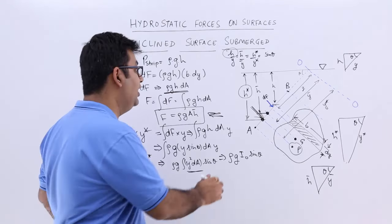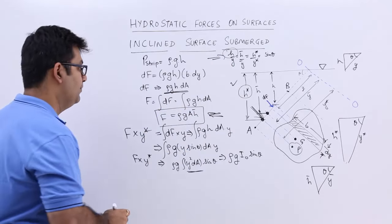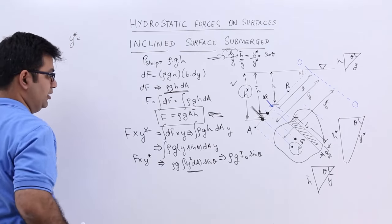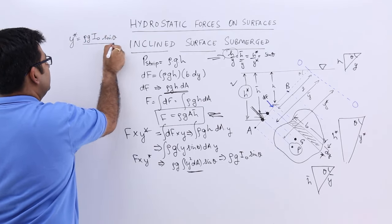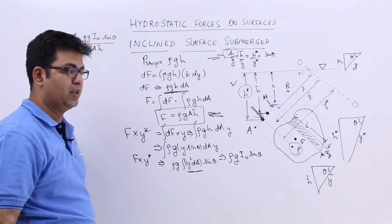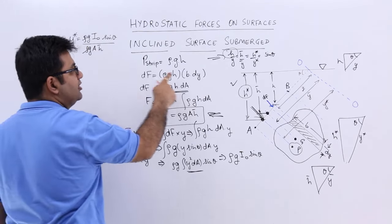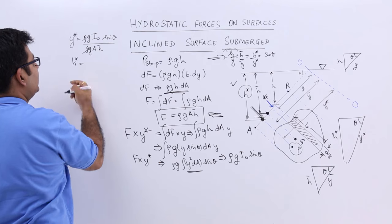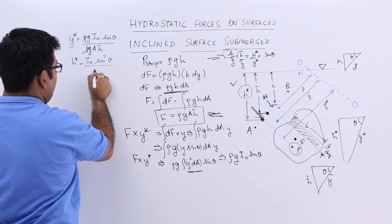We do not want y-star; we need h-star, and that is where the sin(theta) ratio comes in handy. So y-star = rho·g·I₀·sin(theta) / F, where F = rho·g·A·h-bar. Cancelling rho·g, and using y-star = h-star / sin(theta), we get h-star = I₀·sin²(theta) / (A·h-bar).